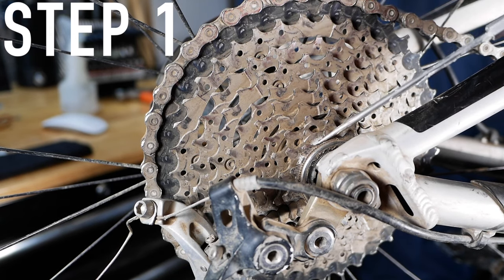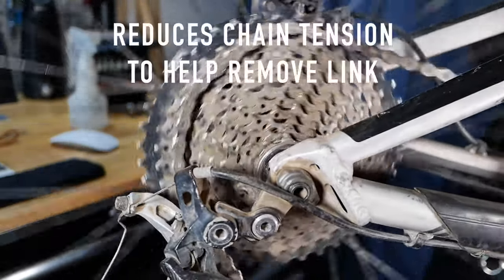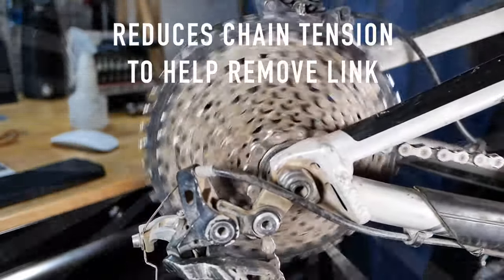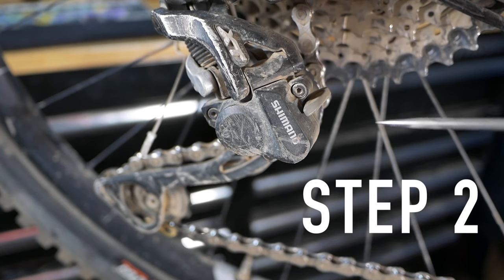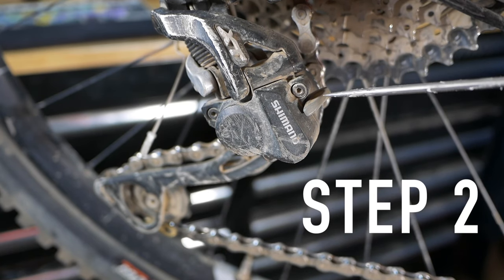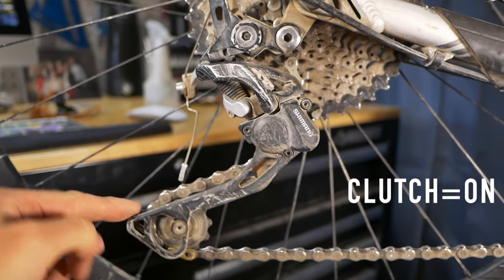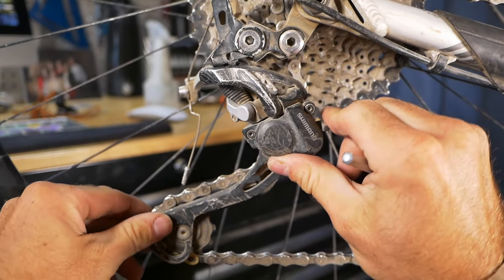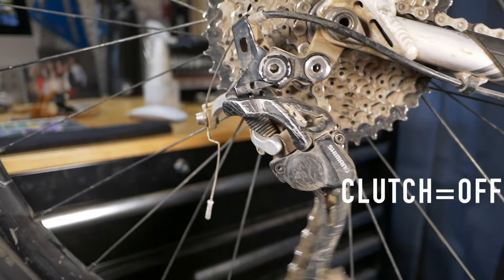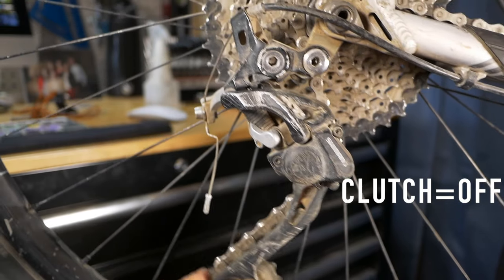First thing you're going to do is shift down to your lowest gear. The next step is to go to your derailleur and turn off the clutch. In the on position, that does not move. Turn the clutch off and now it will come forward and give you slack in that chain.